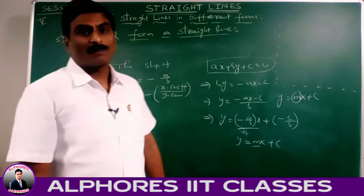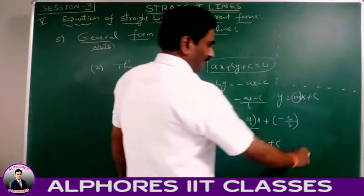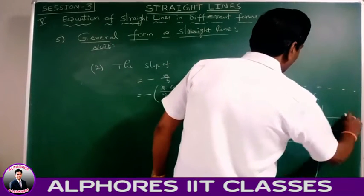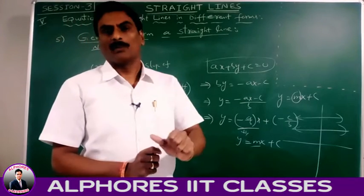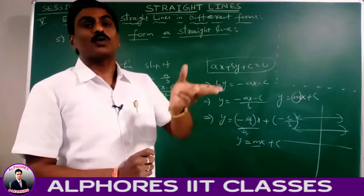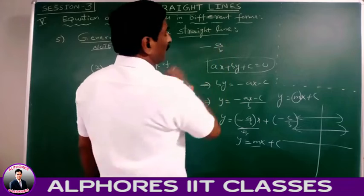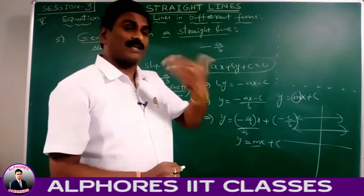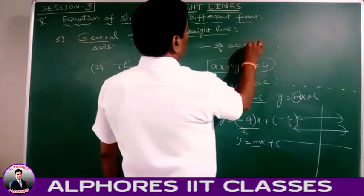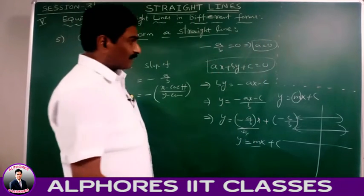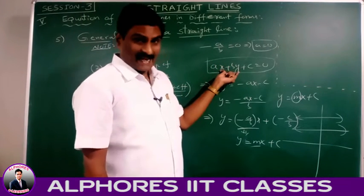Suppose this line is a horizontal line — lines parallel to the x-axis. The slope of a horizontal line is 0. If two lines are parallel, their slopes are equal (m₁ = m₂). The slope of ax + by + c = 0 is -a/b, but if it is horizontal, then -a/b = 0, which means a = 0. If the x-coefficient equals 0, the line is parallel to the x-axis or a horizontal line.